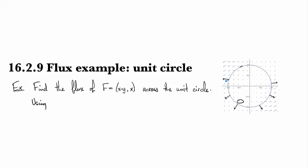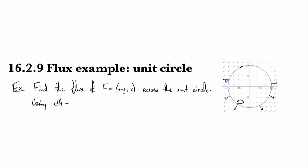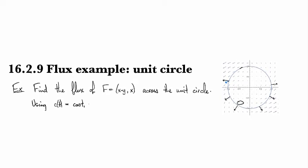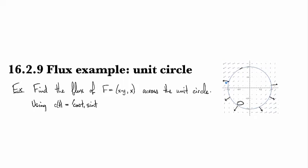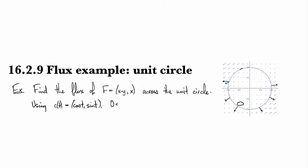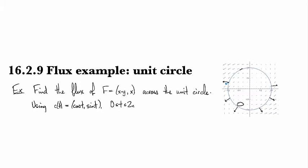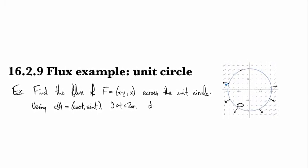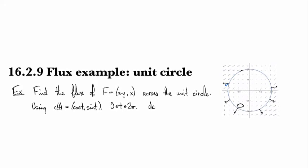So first step, we're going to take our parameterization and we do the usual thing, because it's all we ever do: cosine t, sine t from 0 to 2π. And as usual we've got our dc/dt, which is going to be minus sine t, cosine t dt.